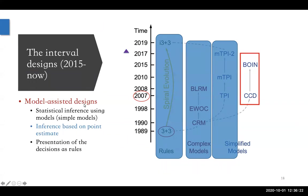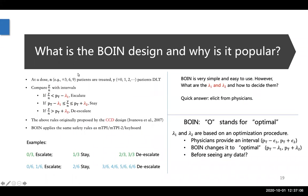Let's move to even simpler model-based or model-assisted designs. The CCD design in 2007 and the BOIN design in 2015 both still use beta-binomial models, but the difference is in the inference. For the MTPIs, the inference is based on the posterior probability of the intervals. For CCD and BOIN, the inference is based on a point estimate — essentially the ratio of the DLT number over the number of patients treated at a given dose, the observed toxicity rate. BOIN has become quite popular in some pharmaceutical industries and you start to see it applied in practical trials. Let me introduce what the BOIN design is and its connection to the CCD design.